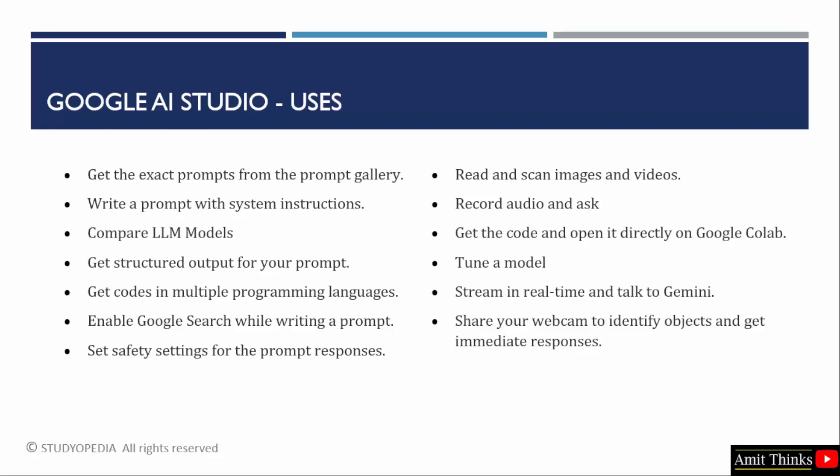Let us now see the uses. With Google AI Studio, you can write prompts easily because a prompt gallery is provided with multiple examples related to specific tasks. You can also write prompts with specific instructions, compare the output of LLM models, and get structured output for your prompt. For example, if you want your prompt's output in a JSON format, you can easily achieve this with Google AI Studio.